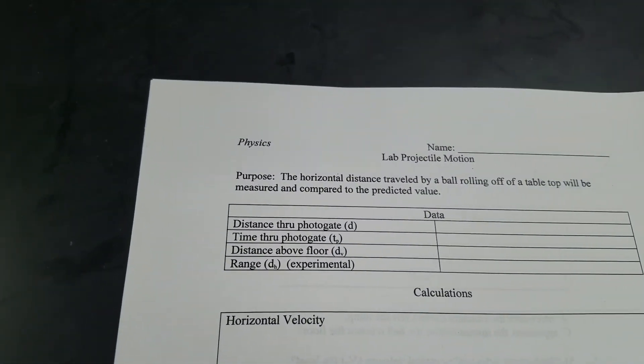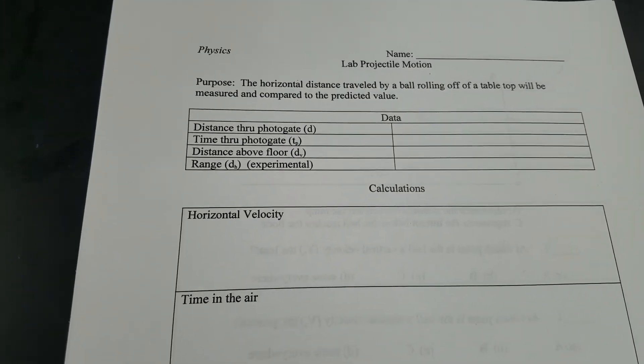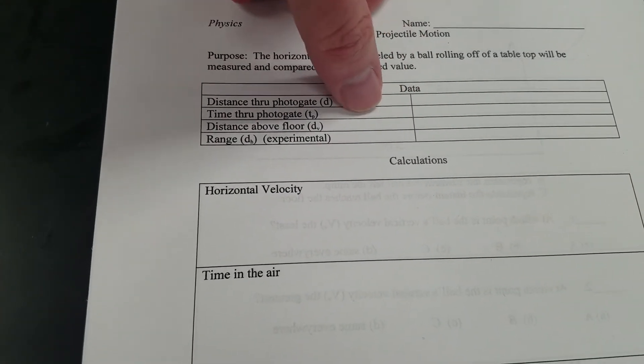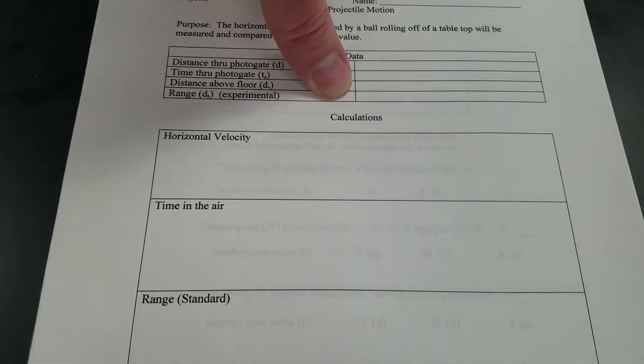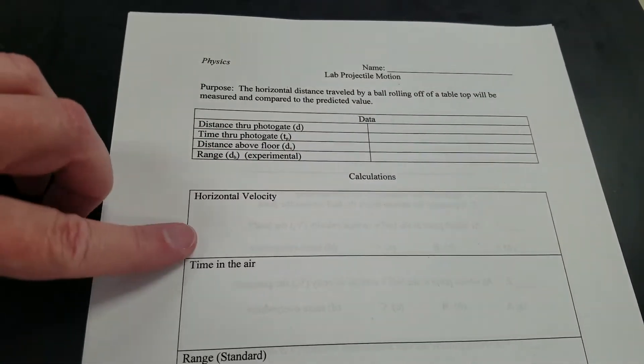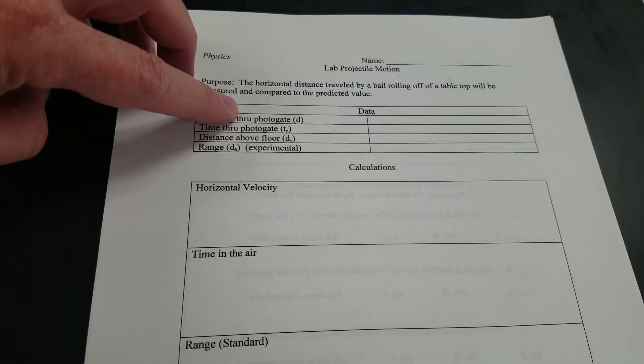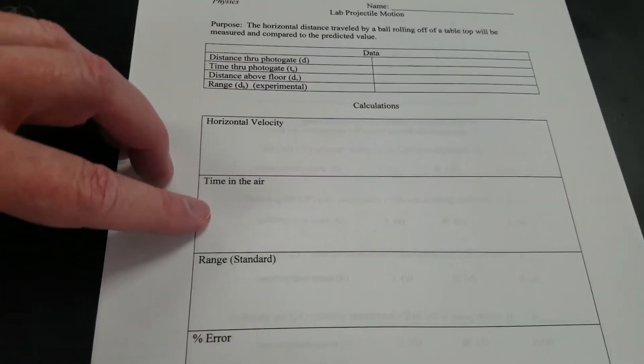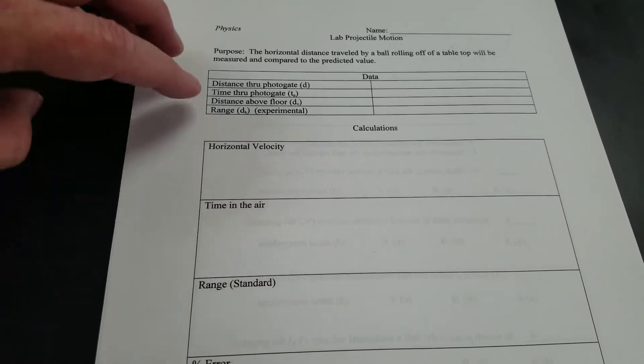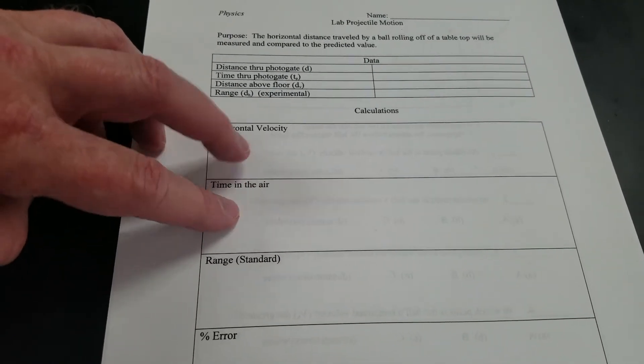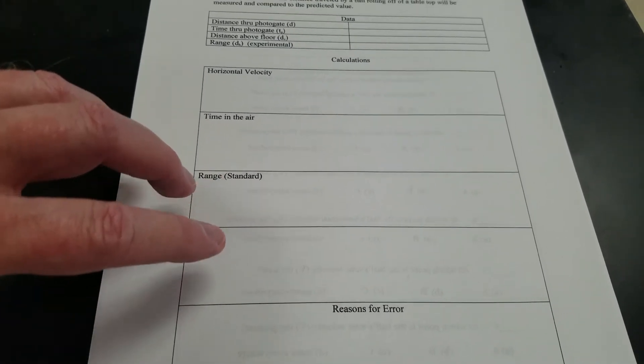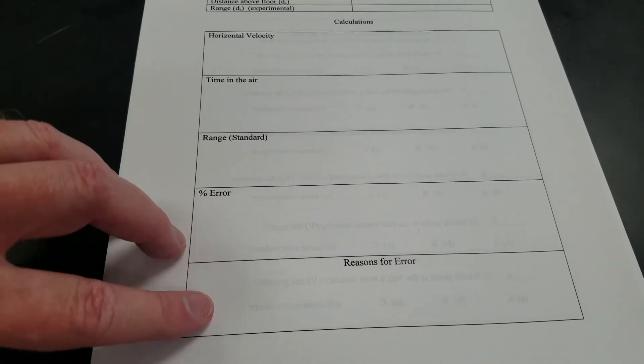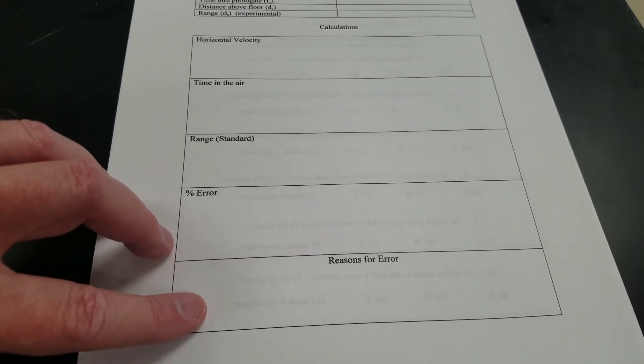All right, so here is the data. So distance between the photo gates, time through the photo gates, distance above the floor, our experimental range, what we measured which was 83.7 centimeters. Then calculate the horizontal velocity from the distance through the photo gates and the time through the photo gates. Then figure out the time in air from the height it falls from which it fell from about one meter. Then use the horizontal velocity and the time to figure out the range, the calculated range. Then determine the percent error as well as any errors that might be in this lab which there's a few that you can mark.